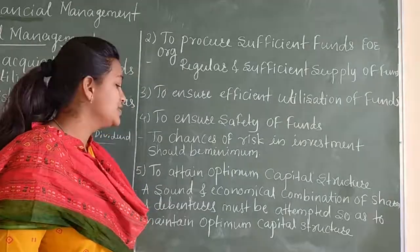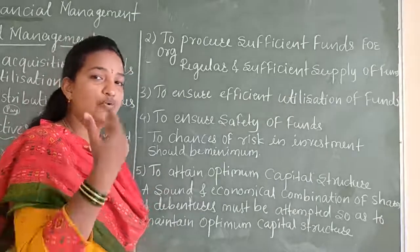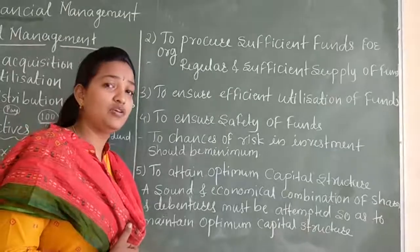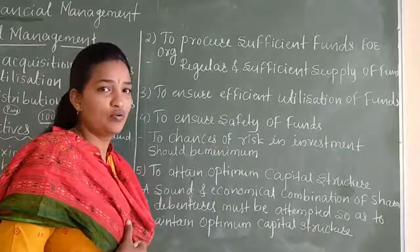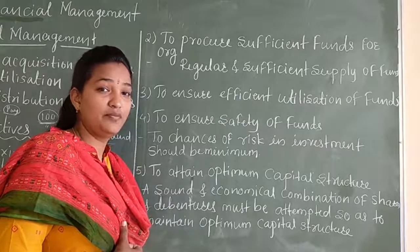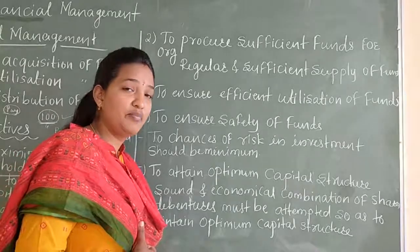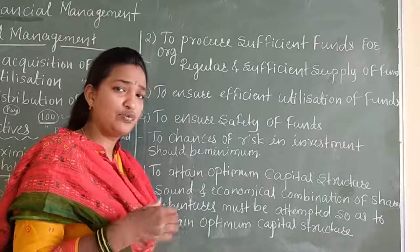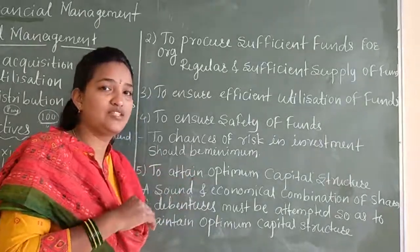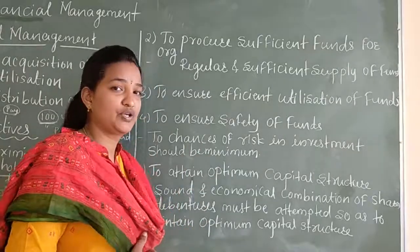The last objective is to attain an optimum capital structure. A sound and economical combination of shares and debentures must be maintained. Whether you take a loan from a bank, issue debentures, or collect money from shareholders, the interest rate or dividend you pay should be kept minimum. While the first objective is to maximize shareholders' wealth, there should be a balance — a sound and economic balance between shares and debentures — so you can obtain an optimal capital structure for your business.